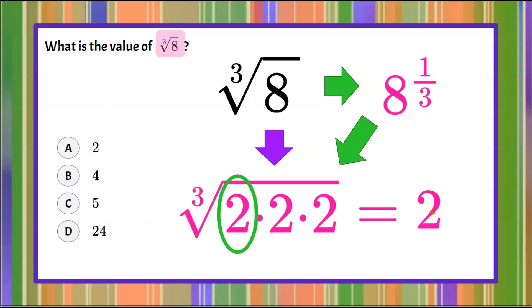Understanding that this is the inverse of cubing, so cube root and cubing have an inverse relationship. 2 cubed is 8. The cube root of 8 is 2. And that would give us answer choice A, 2.